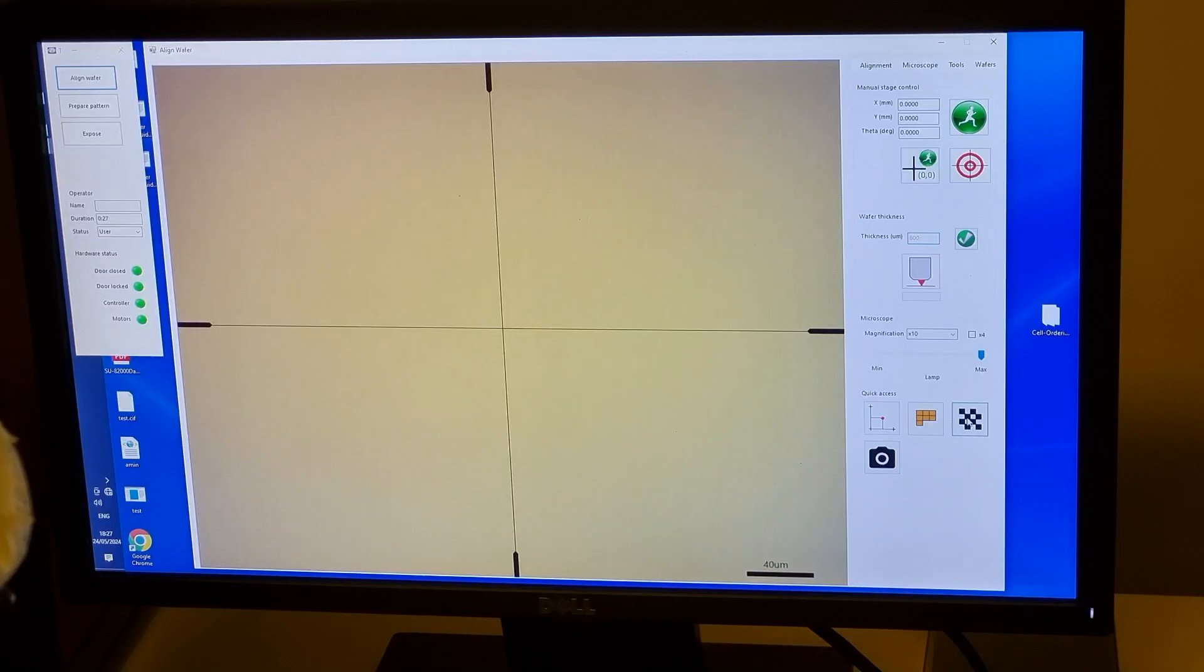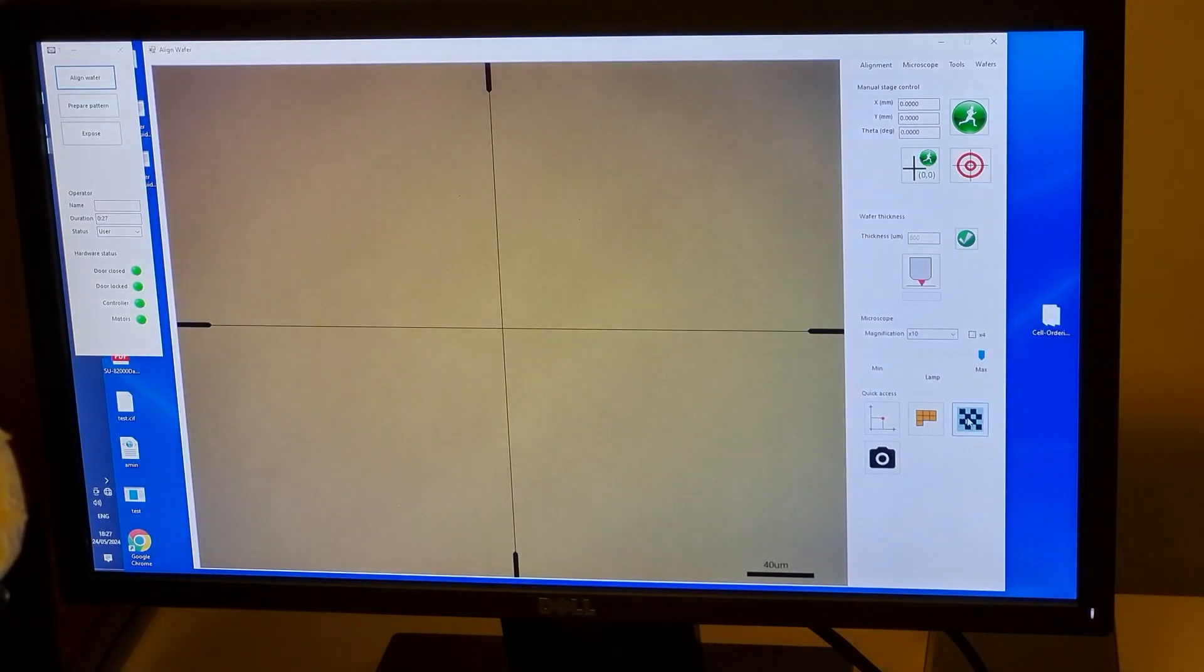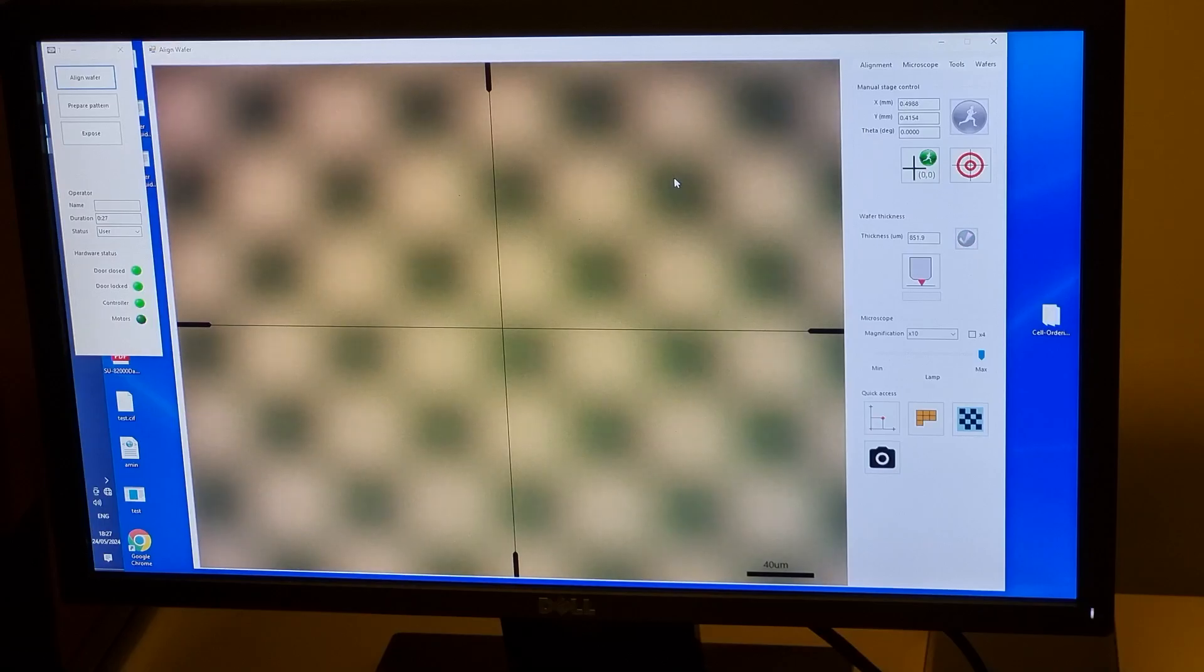We now need to help the machine focus on the surface. Enter the approximate wafer thickness in the text box, then turn on the optical checkerboard. Now use the mouse scroll wheel to move the substrate up and down and bring the checkerboard into focus. The checkerboard pattern is projected onto the substrate by the same microscope and digital mirror device that will create the exposure pattern.